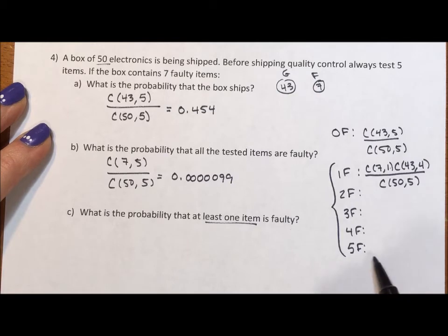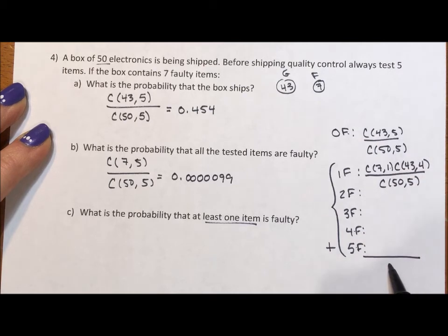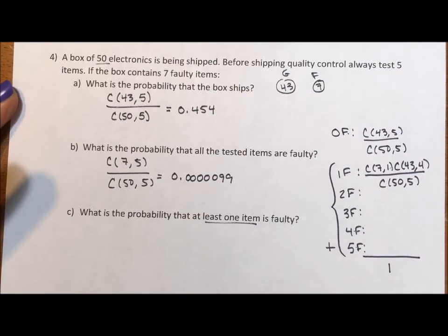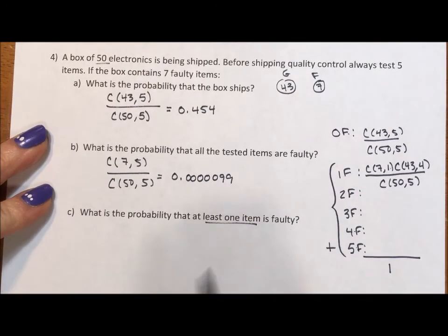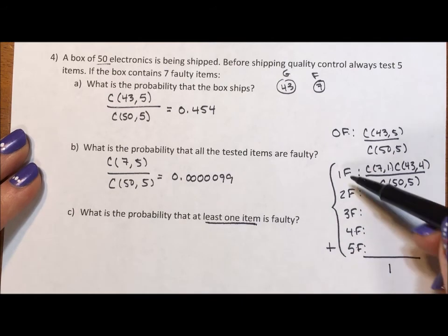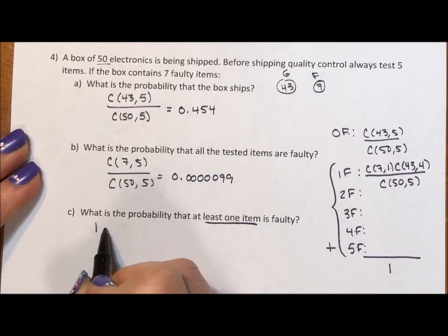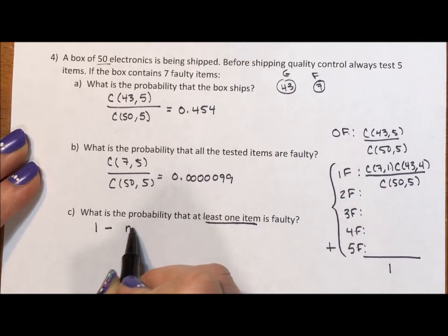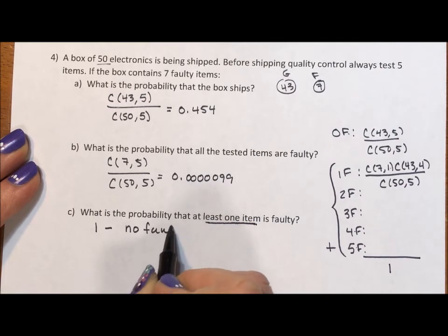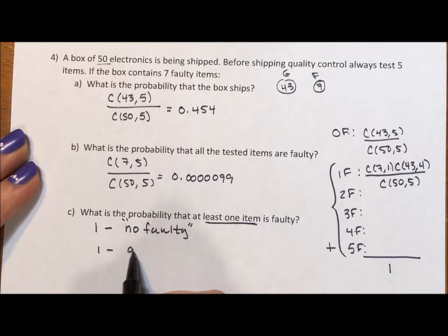But if we added all these together, just add them down, 0 plus 1 plus 2 plus 3 plus 4 plus 5, we should be getting 1. That's what probability is. It should all add up to 1. Which means if we have the probability of at least one item, we should be able to flip this around and instead of adding the 5 together, we should be able to say 1 minus no faulty, which is the same as saying 1 minus all good.